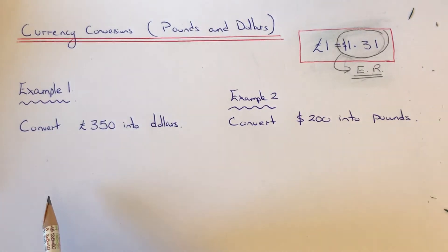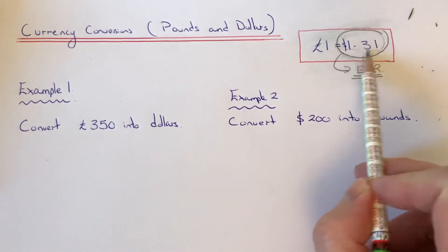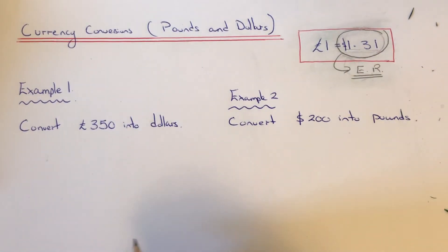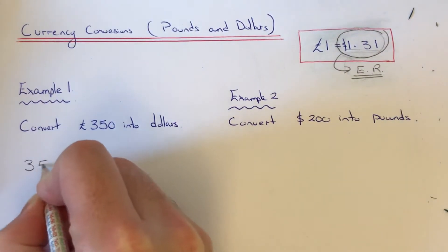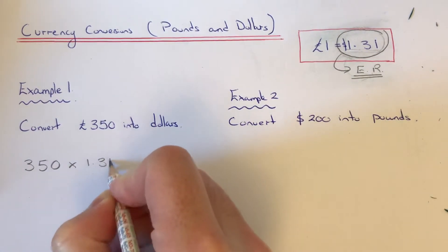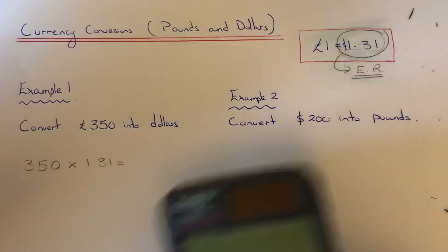Okay, so when we change it into dollars, we're going to multiply by the exchange rate number. So I'm going to multiply it by 1.31. So we got 350 times 1.31, and if you just put that on a calculator...